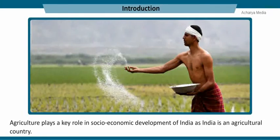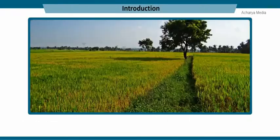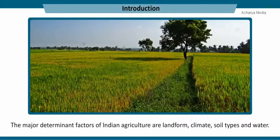Agriculture plays a key role in the socio-economic development of India. Agriculture is the backbone of the Indian economy as it contributes to the national income and trade of India. In India, different agricultural patterns are practiced due to varied geographical factors. The major determinant factors of India's agriculture are landform, climate, soil types, and water.